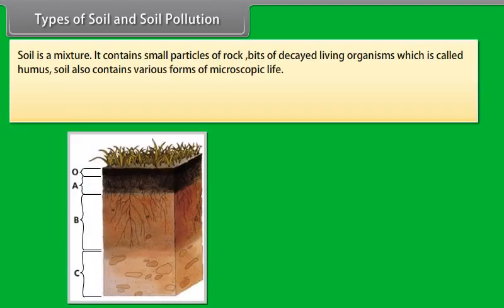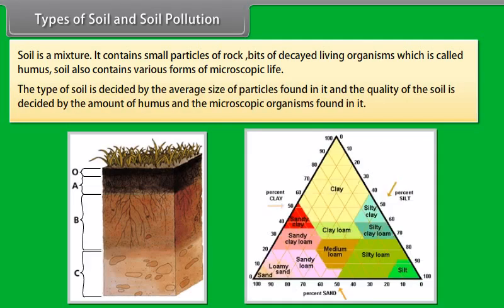Types of soil and soil pollution. Soil is a mixture. It contains small particles of rock, bits of decayed living organisms which is called humus. Soil also contains various forms of microscopic life. The type of soil is decided by the average size of particles found in it and the quality of the soil is decided by the amount of humus and the microscopic organisms found in it.